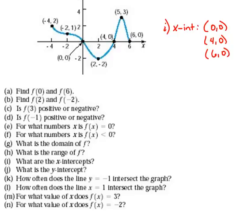Now the next thing that they ask us in part j is, what is the y-intercept? And again, we're going to look at our picture here. A y-intercept is where it crosses the y-axis. So that would be this point right here. Our y-intercept, then, is the point (0, 0).